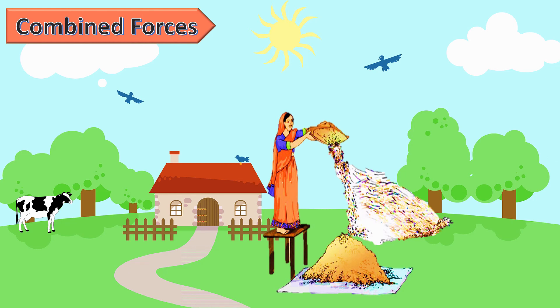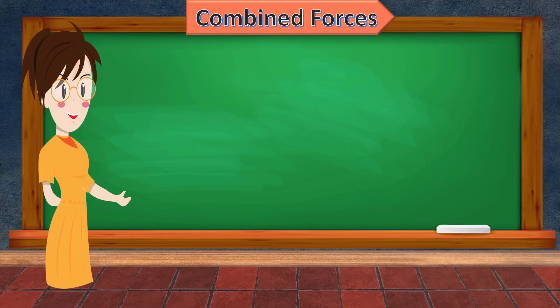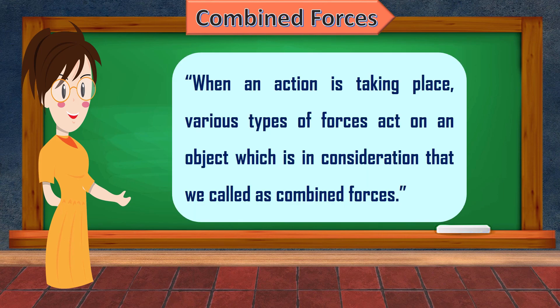Students, do you know what winnowing is? Winnowing is the method of separation of grains, in which we separate the husk from the grains with the help of wind. Now, tell me which forces are exerted by the woman in the given picture while winnowing. We see that the woman exerts a muscular force to lift the winnowing basket, and the grains fall onto the ground due to gravitational force. In this example, two forces are taken into consideration. When an action is taking place, various types of forces can act on an object simultaneously, and these are called combined forces.